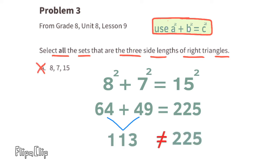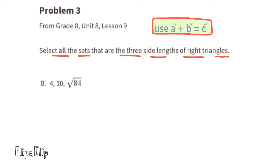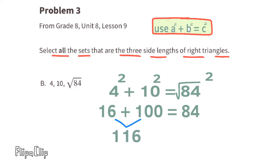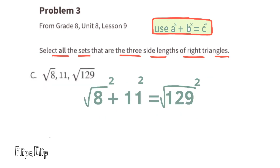For set B, the side lengths are 4, 10, and √84. Four squared is 16, ten squared is 100, and √84 squared is 84. Since 16 plus 100 does not equal 84, this cannot be a set of side lengths for a right triangle.